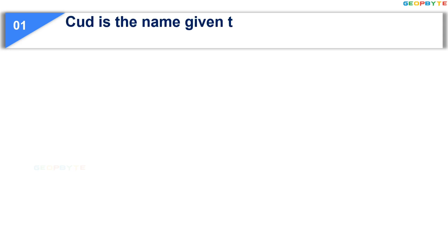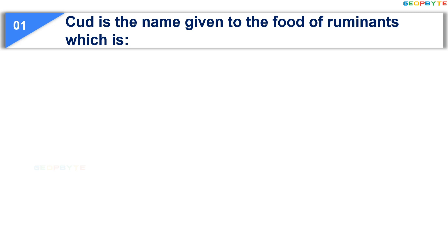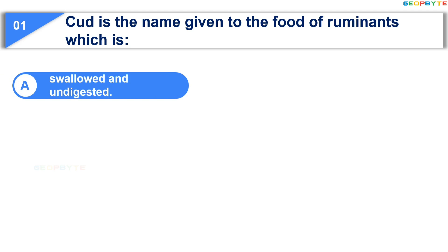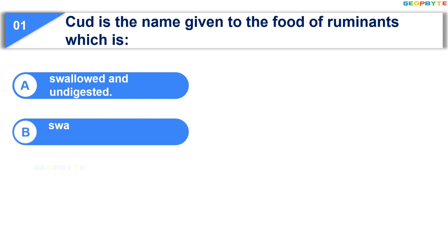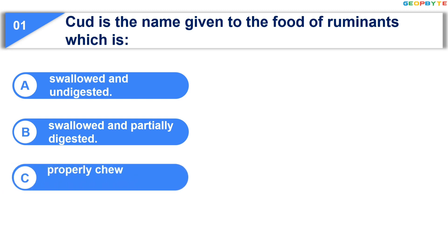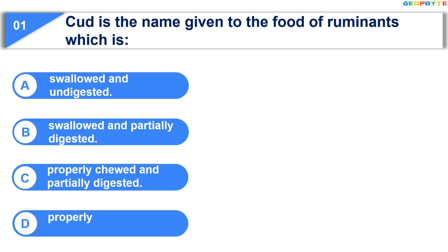The first question is: Cud is the name given to the food of ruminants which is — Option A: swallowed and undigested; Option B: swallowed and partially digested; Option C: properly chewed and partially digested; Option D: properly chewed and completely digested.